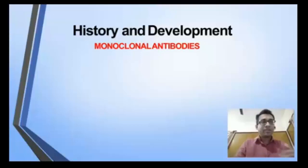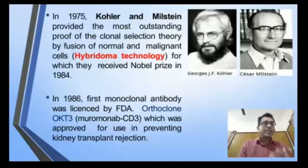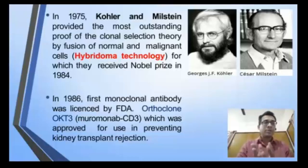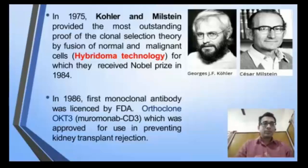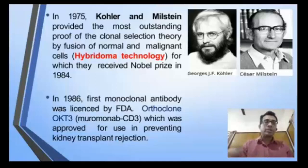Regarding the history of development, Köhler and Milstein in 1975 were studying clonal selection theory and performed an experiment where they fused a normal B cell and a malignant cell to generate a cell known as a hybridoma. This was the hybridoma technology for which they received the Nobel Prize in 1984. From hybridoma cells we can generate monoclonal antibodies, and the first monoclonal antibody was licensed by the FDA in the US in 1986.